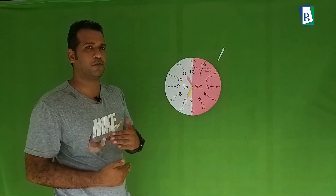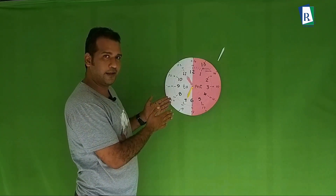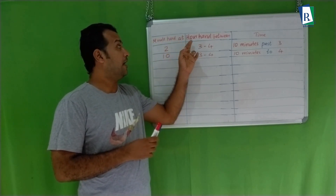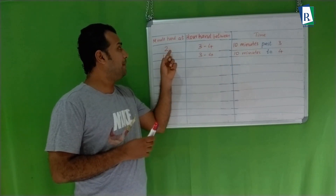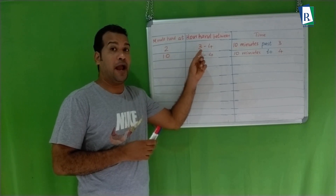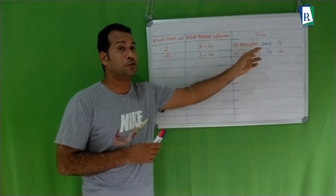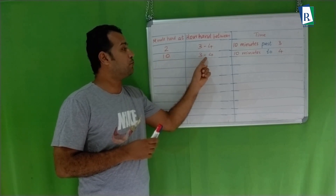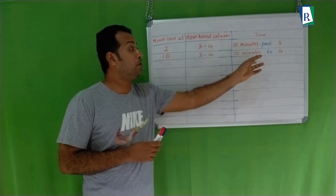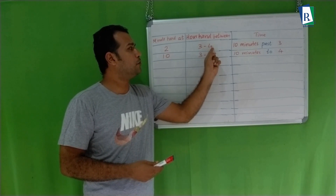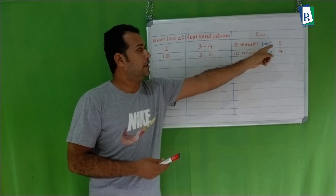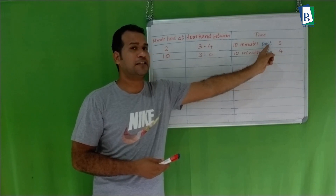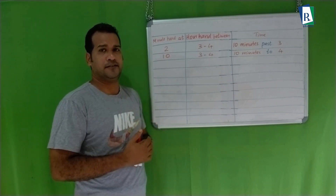I think you can do some questions. Let's do some questions on time. If the minute hand is at 2 and the hour hand is in between 3 and 4, we read the time as 10 minutes past 3. Next question: minute hand at 10, hour hand in between 3 and 4 — 10 minutes to 4. In the first case we wrote 3, in the second case we wrote 4 — that is the difference: past uses the first hour, to uses the next hour.